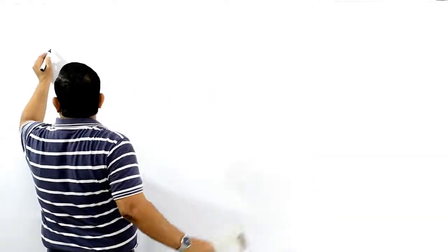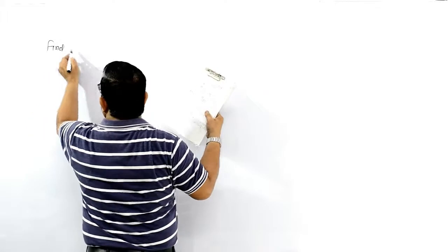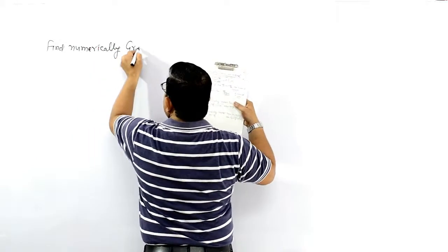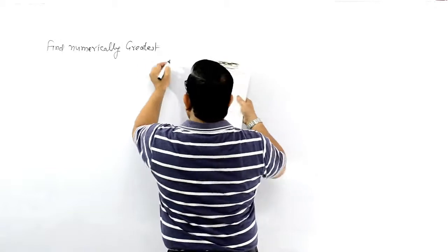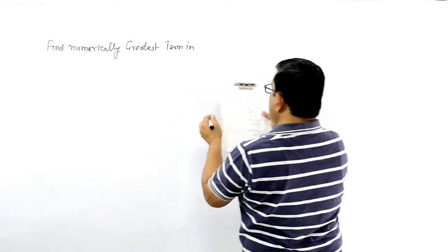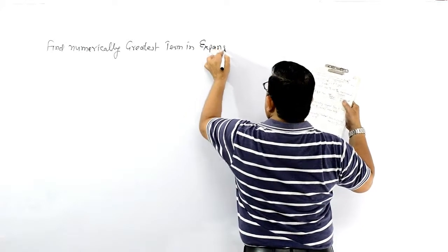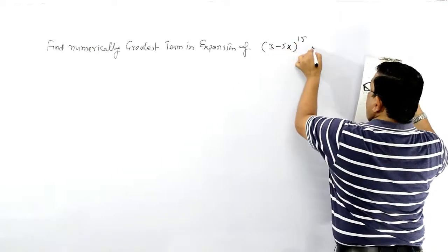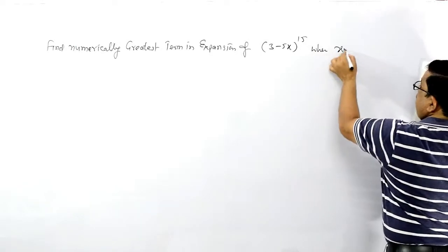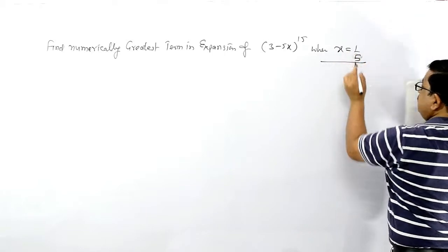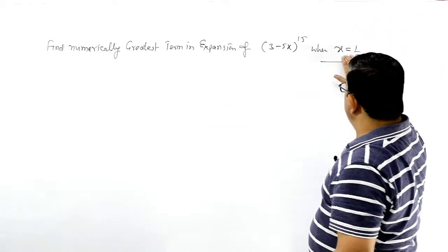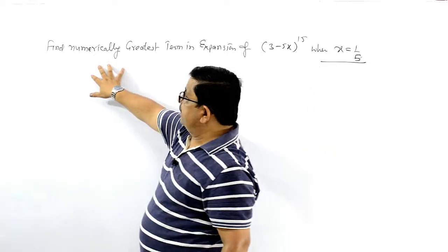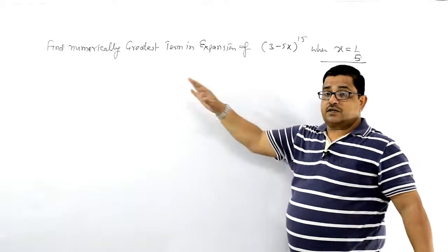Let's find numerically the greatest term in the expansion of (3 - 5x)^15 when x = 1/5. यह मैं आपको बता रहा था कि वो x की value देगा और इस expansion पर आपको देखना है कि what is the numerically greatest term. सबसे important बात बता रहा हूं।